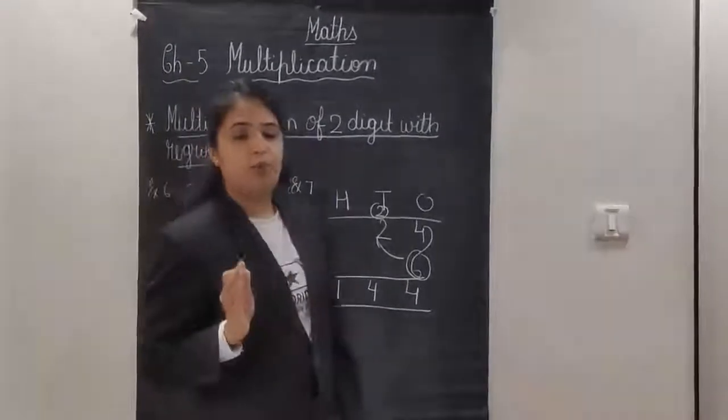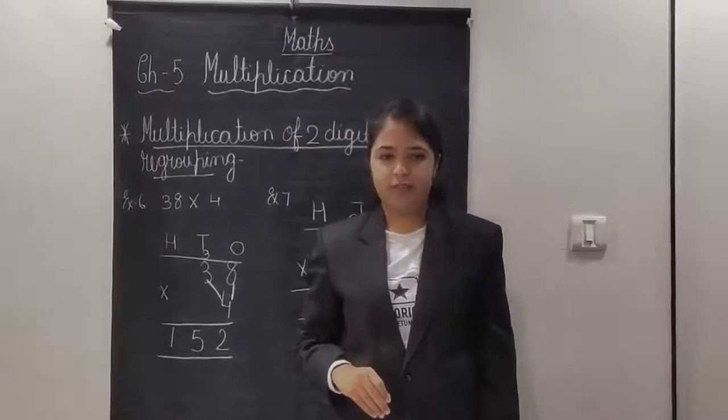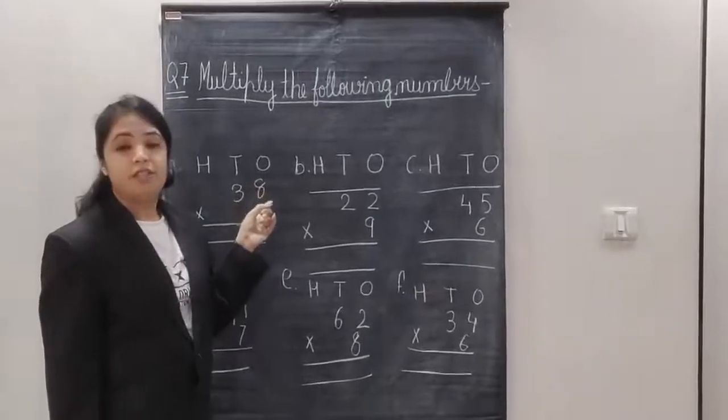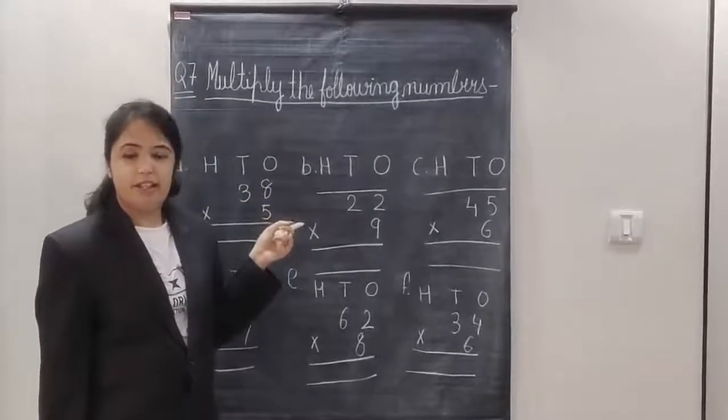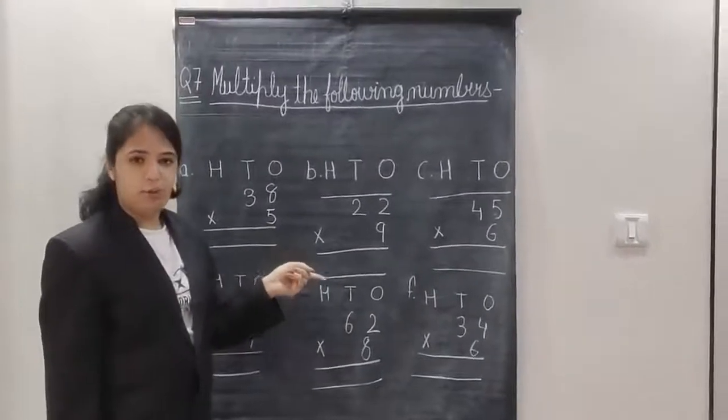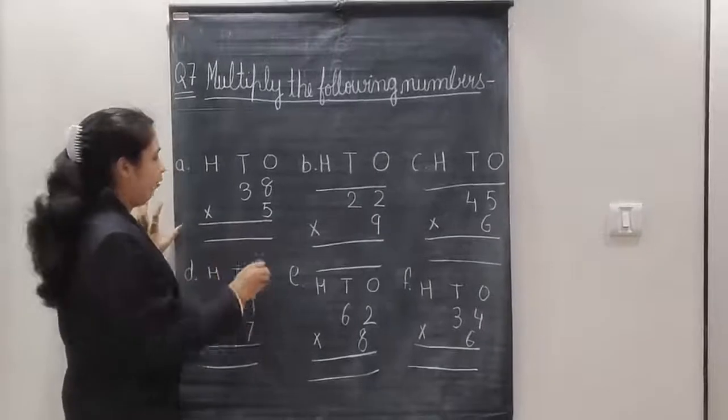So here we have seen the 2 examples of the course book. Now let's move to course book exercise. This is the exercise of course book, Question number 7, which is on page number 73 in course book. There are 6 sums which we are going to do now. So, we will start from the ones place.